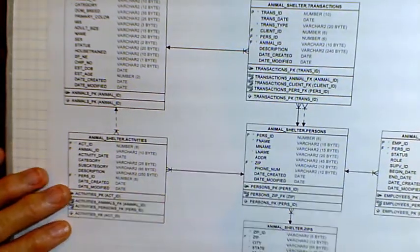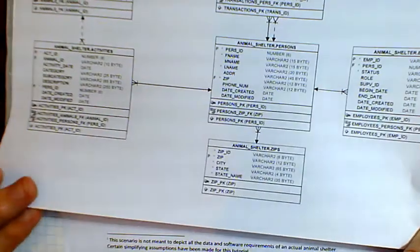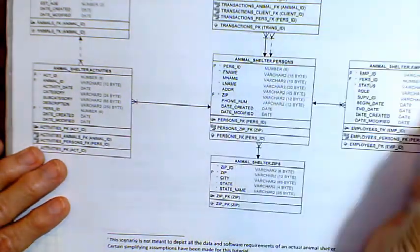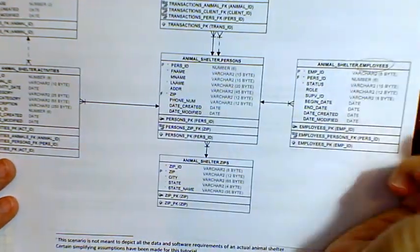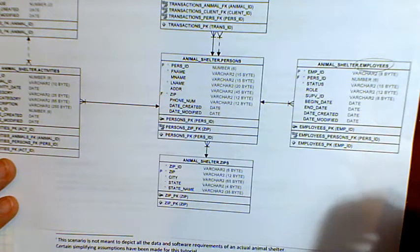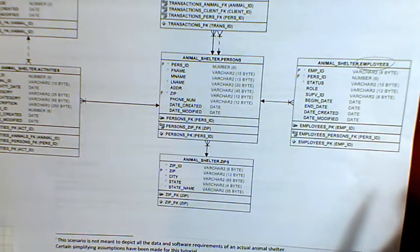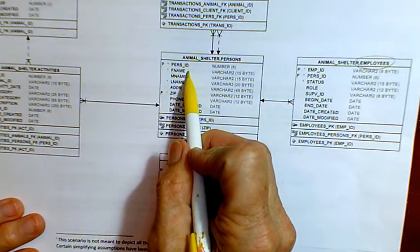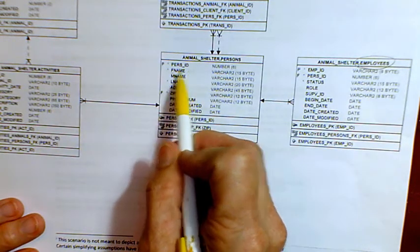Let's start with people. We're going to have employees, which we have a table for, but we also have people who are volunteers and clients. In general, volunteers, employees, and clients all have common attributes. These are things that we want to know about them.